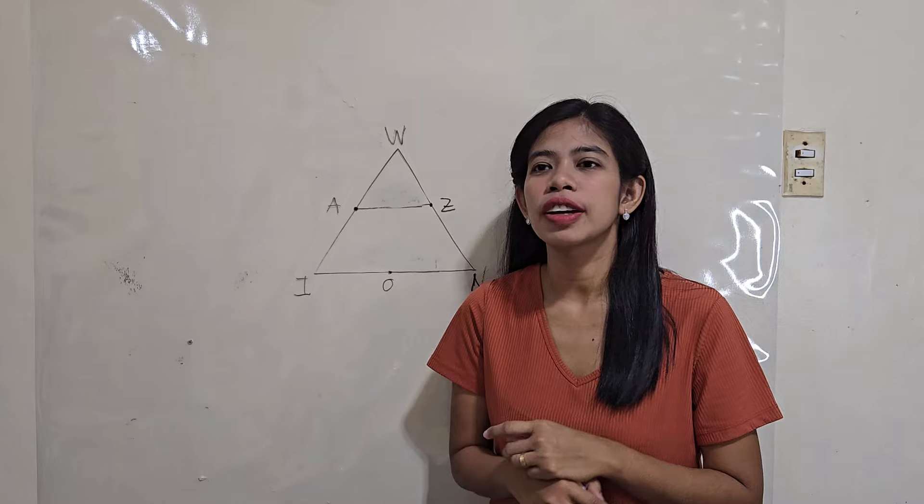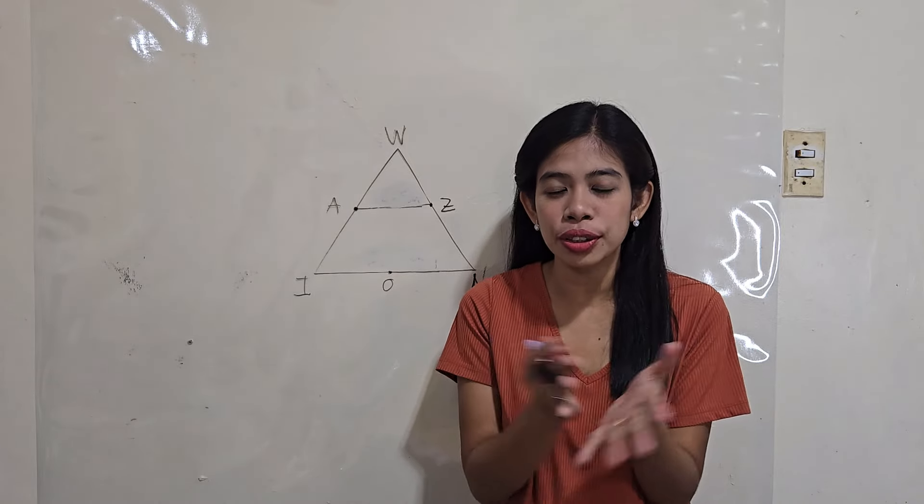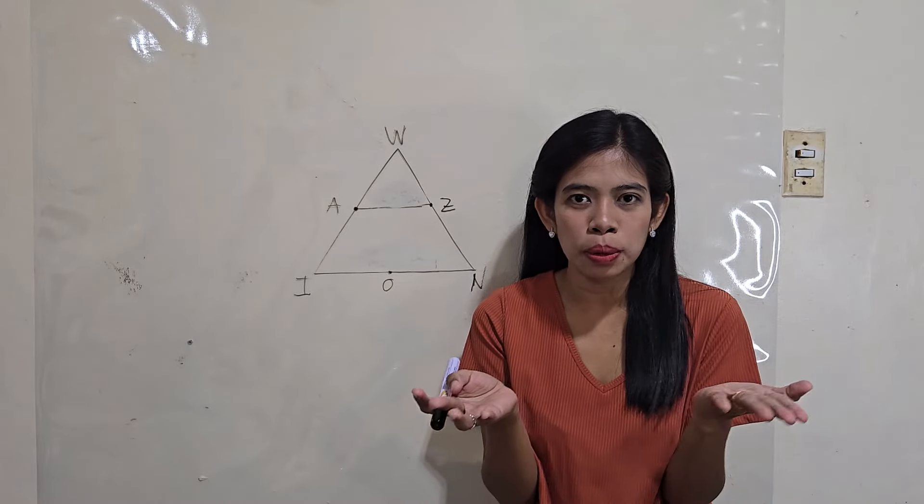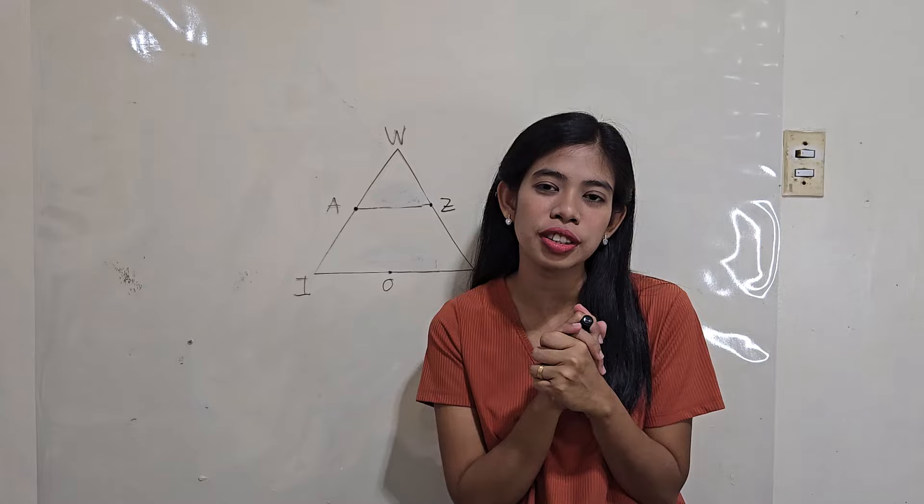Alright, now what if the measure of the midline is given and you were asked for the measure of the third side? Simple. You just have to double it. Just double the measure of the midline and that's it. That's the measure of the third side.